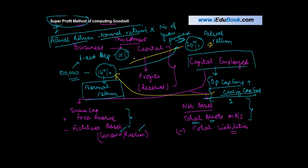You see what are the actual returns that the business has earned, which is the actual profits. The difference between these two is the super profit or super loss. If there is super loss, obviously no goodwill. But if there is a super profit, you multiply it by the number of years of purchase to get the amount of goodwill.